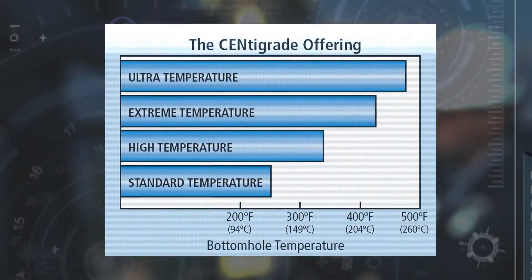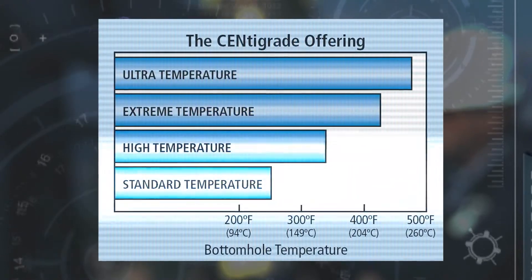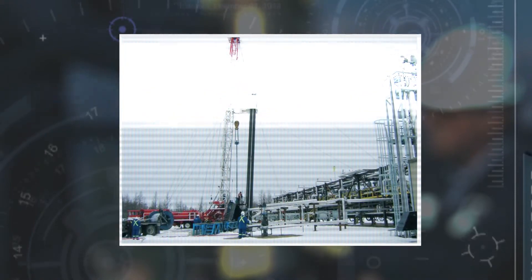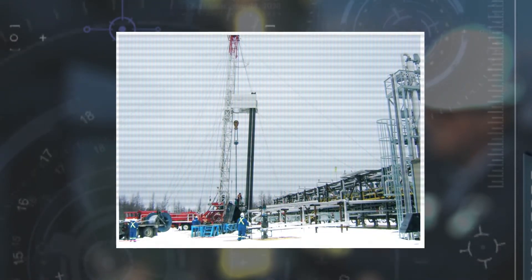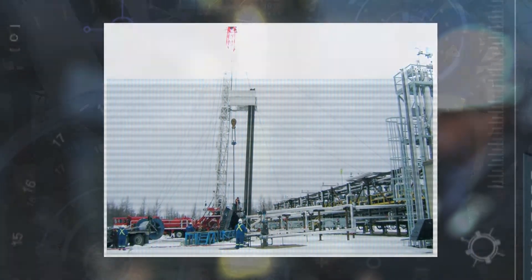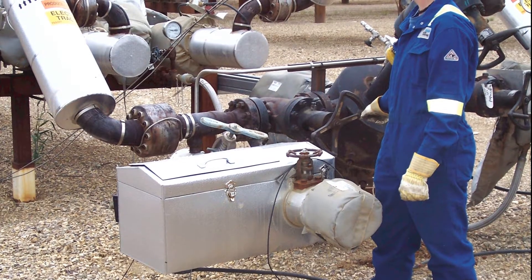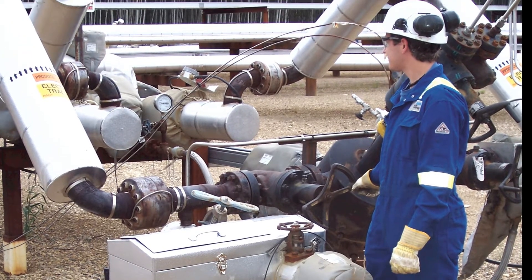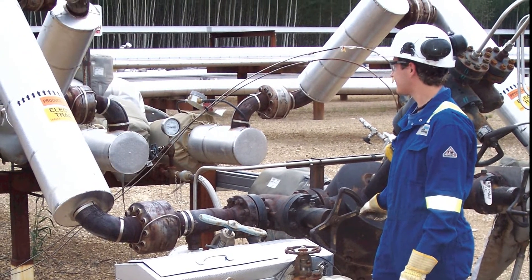Operators have the choice of high temperature, extreme temperature, or ultra temperature ESP systems. We installed our first Centigrade ESP system in a steam assisted gravity drainage well in 2003. In 2006 we introduced our extreme temperature ESP system to the SAG-D market rated at 220 degrees Centigrade.